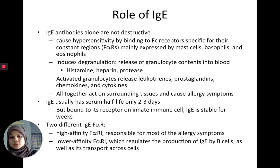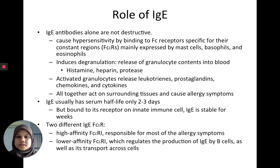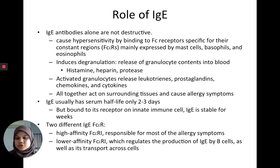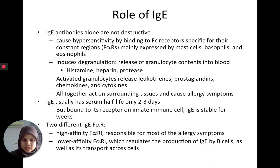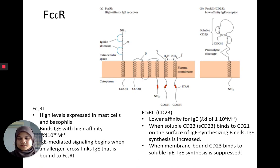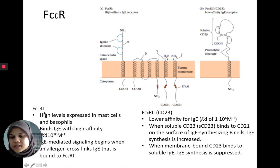IgE has a half-life of only two to three days normally, but when it's bound to the Fc epsilon receptor it can be stable for weeks — causing prolonged symptoms. There are two different types of these receptors: the high-affinity receptor, responsible for most allergy symptoms, and the lower-affinity receptor, which regulates IgE production by B cells as well as its transport.